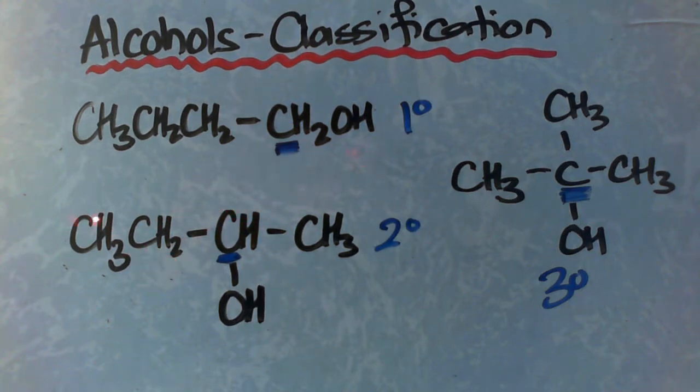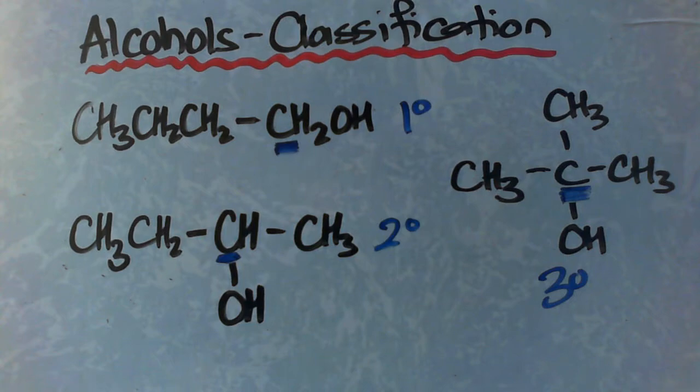So I could either count this as one, two, three, four, so it'd be 3-butanol, or one, two, three, four, 2-butanol. Well of course two is a lower number than three, so we're going to call this 2-butanol.